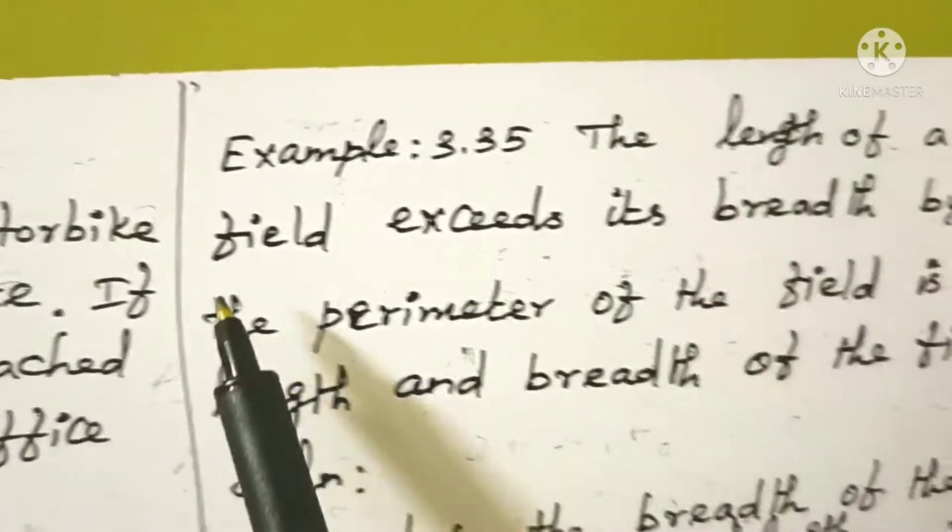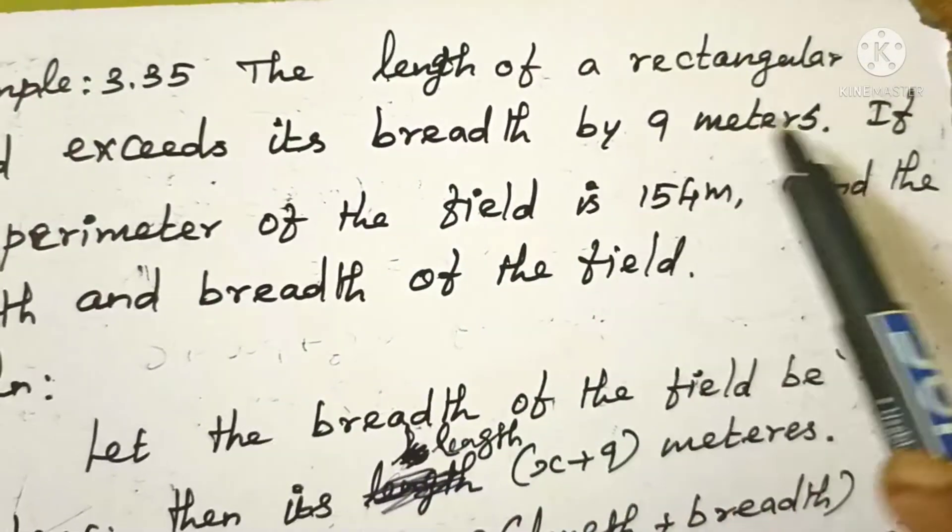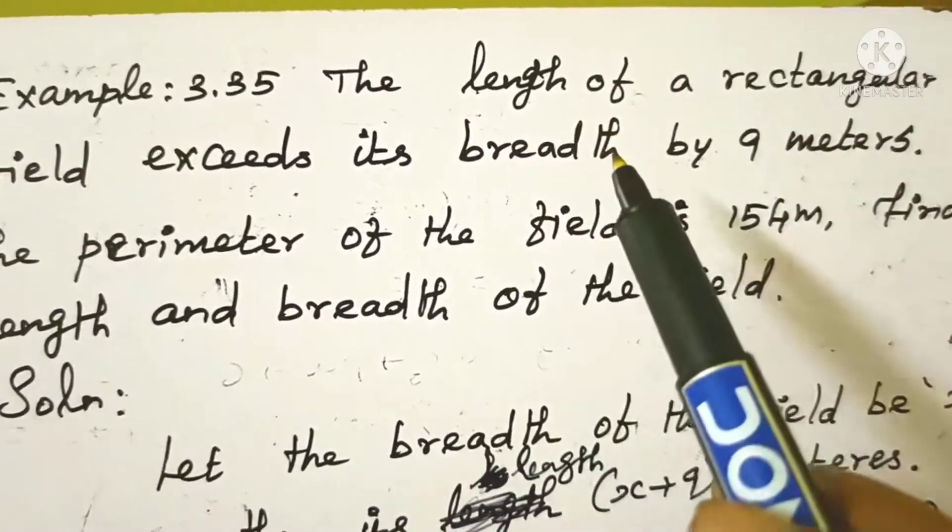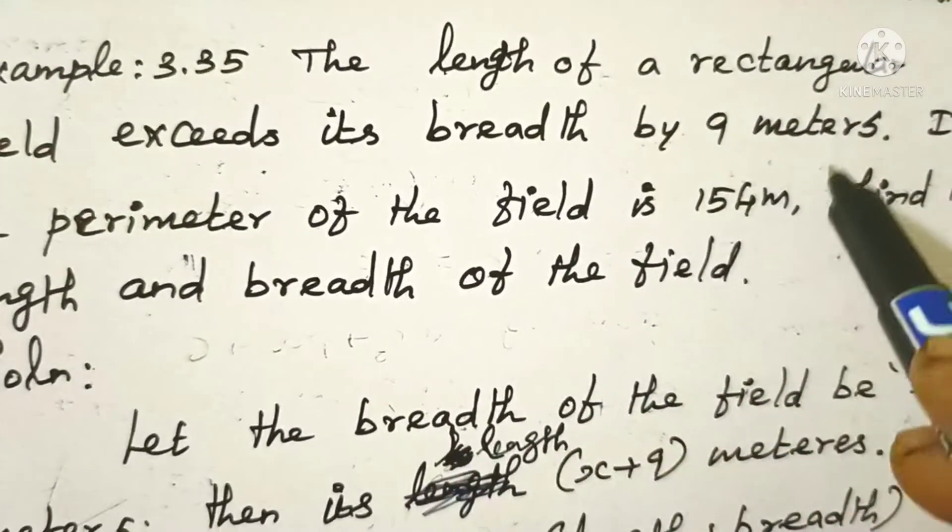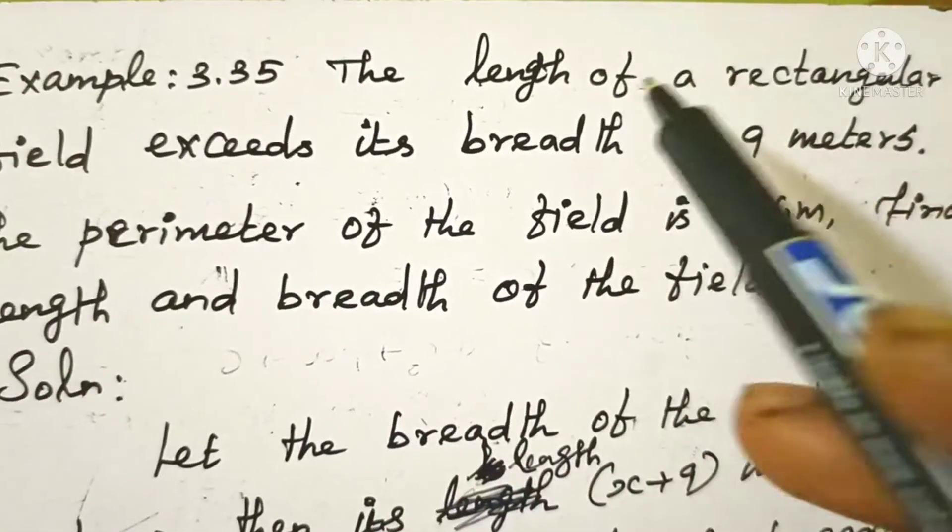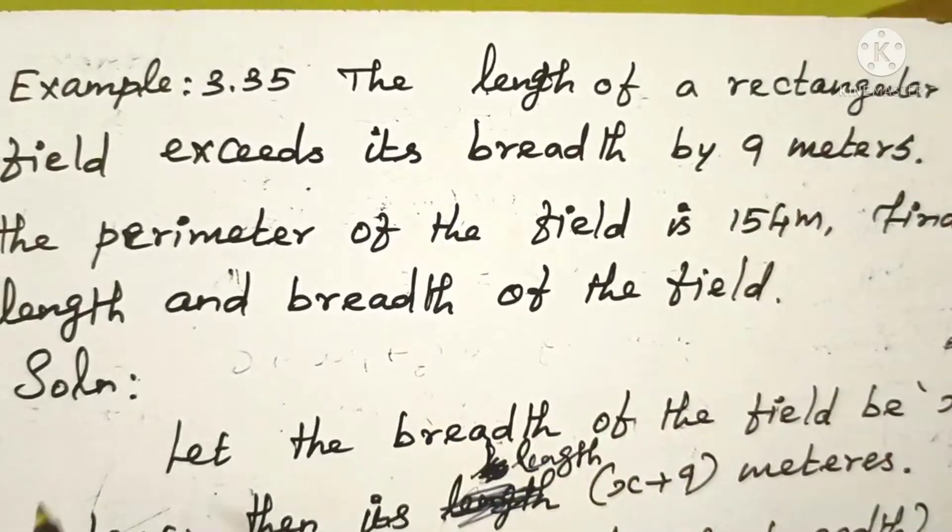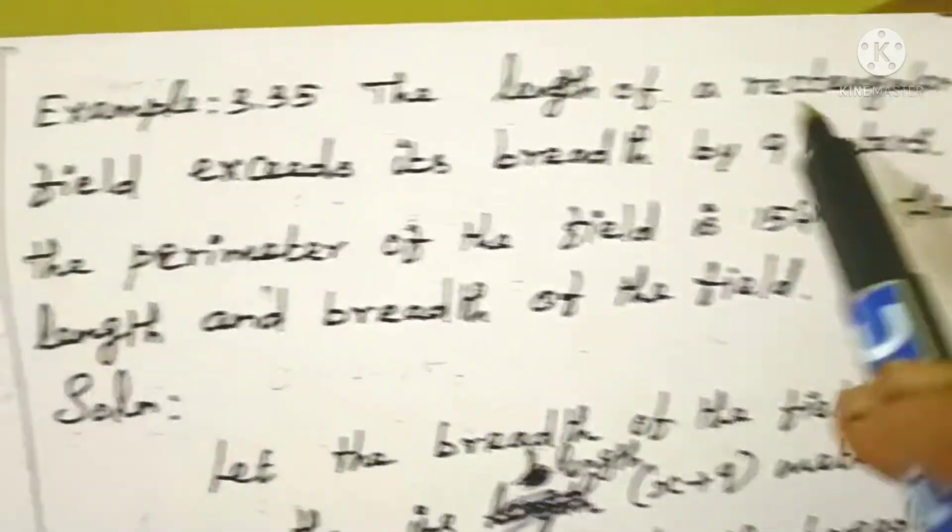The length of a rectangular field exceeds its breadth by 9 meters. The length is 9 meters more than the breadth.